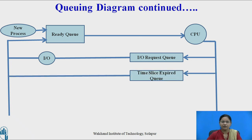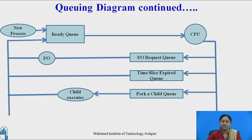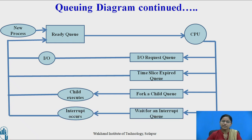If the operating system uses a round-robin scheduling algorithm, the process may be preempted from the CPU and added back into the ready queue when its time slice expires. During execution, a process may also execute a fork system call and a child process may be created, so the process waits until the child finishes executing, then re-enters the ready queue. Similarly, during execution an interrupt may occur, causing the process to enter the waiting state to service the interrupt. Once the interrupt finishes, the process again enters the ready queue.